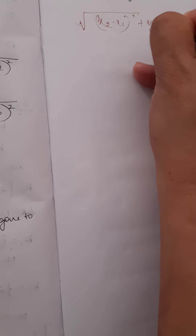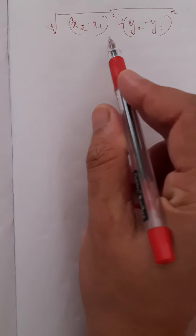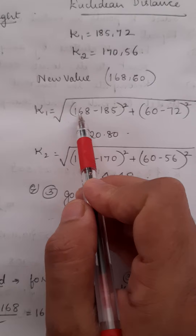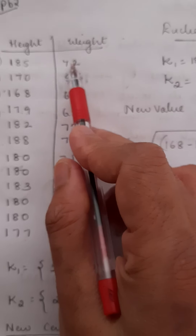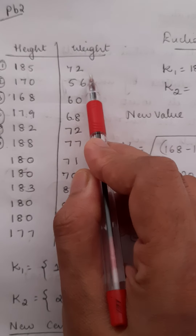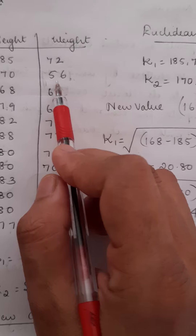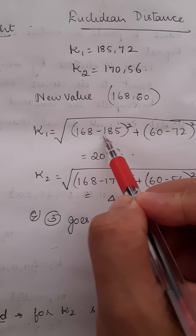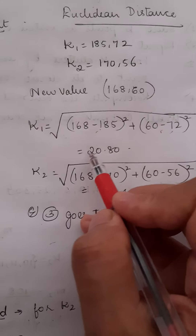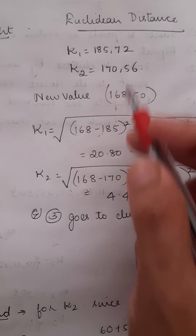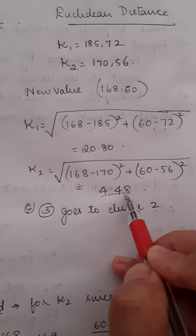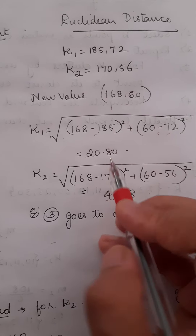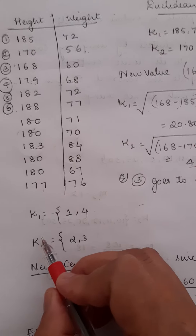We use the Euclidean distance formula: the square root of (x2 minus x1) squared plus (y2 minus y1) squared. Applying this to the third row (168, 60): distance to K1 is the square root of (168 minus 185) squared plus (60 minus 72) squared, which gives 20.80. Distance to K2 is the square root of (168 minus 170) squared plus (60 minus 56) squared, which gives 4.48. Since 4.48 is smaller, the point (168, 60) is closer to cluster K2.